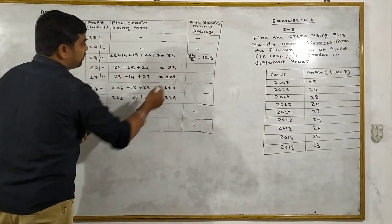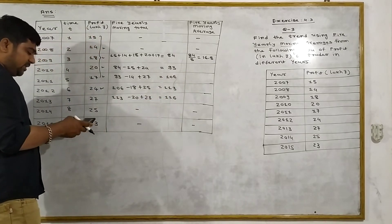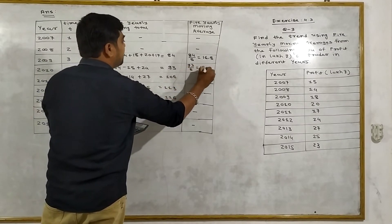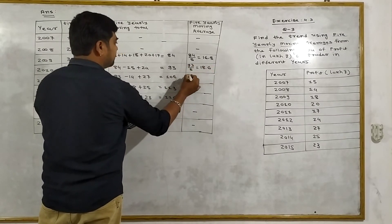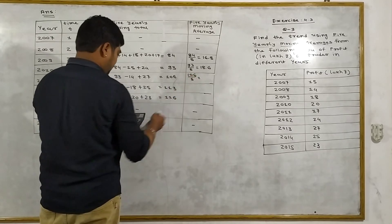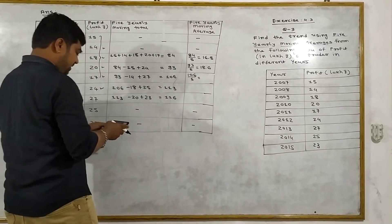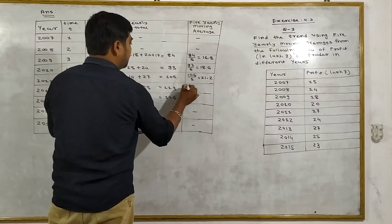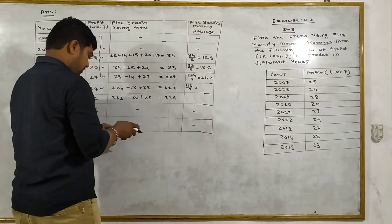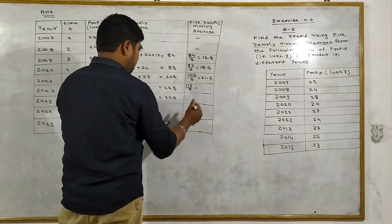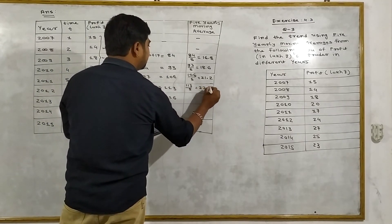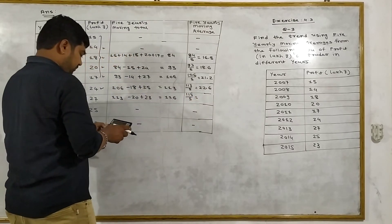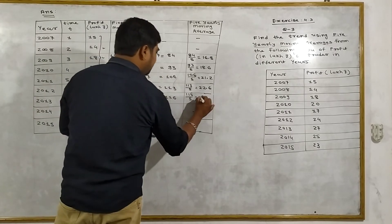Now when we have the totals, we divide by 5. 93 divided by 5 equals 18.6. 106 divided by 5 equals 21.2. 113 divided by 5 equals 22.6. 116 divided by 5 equals 23.2.